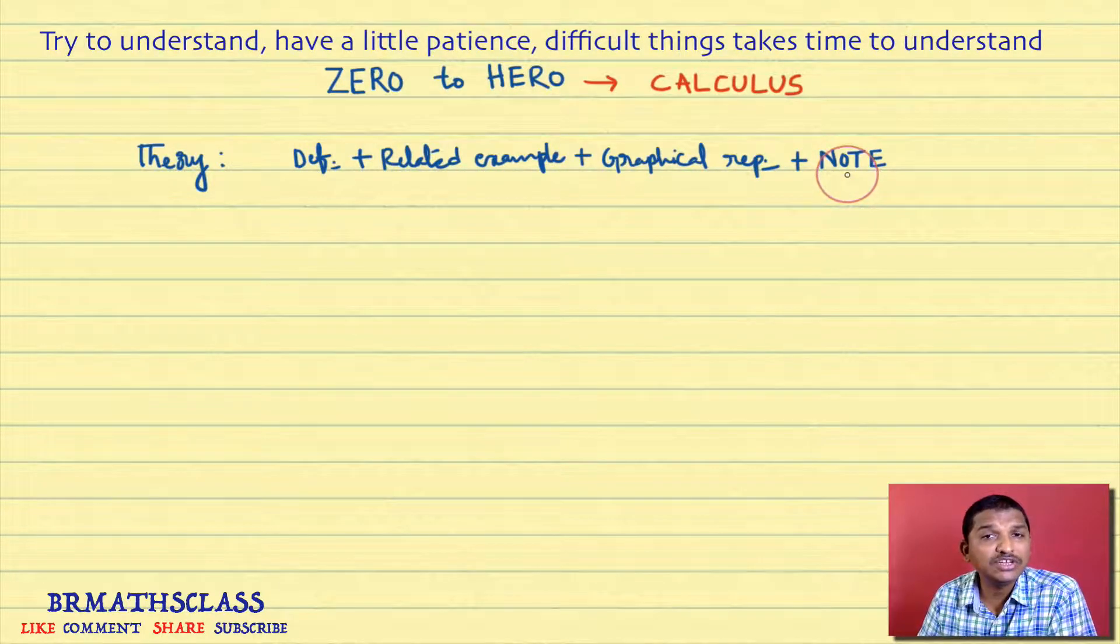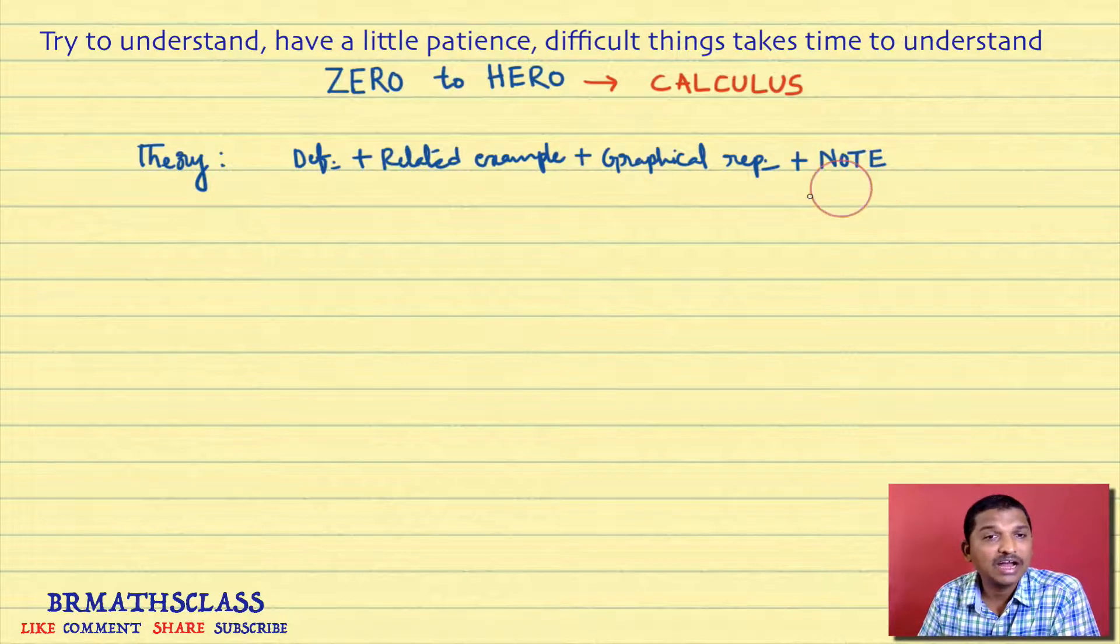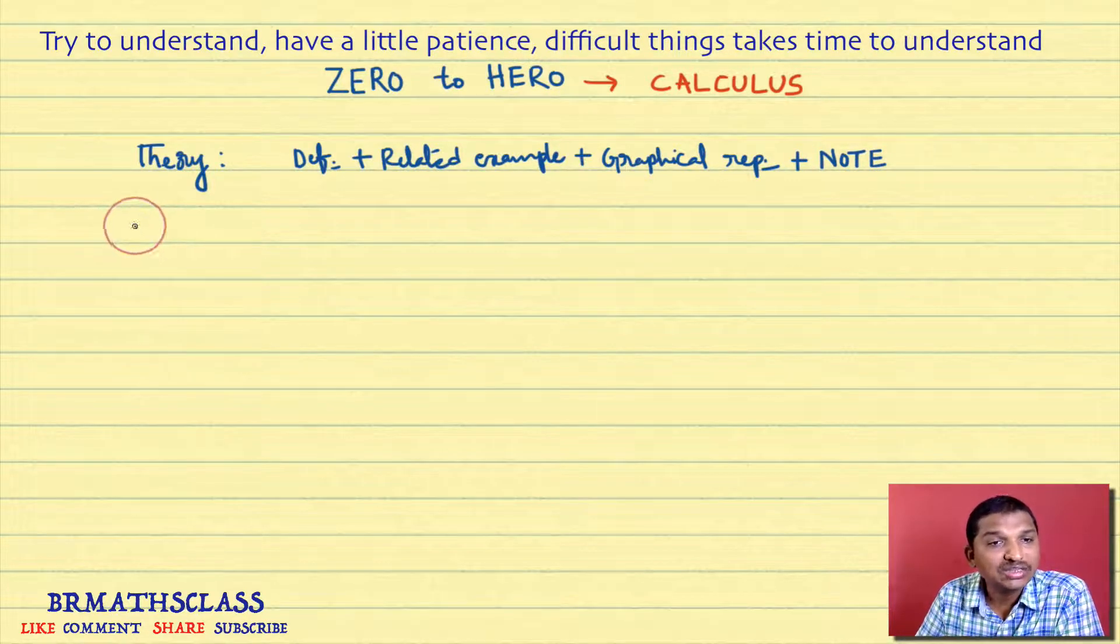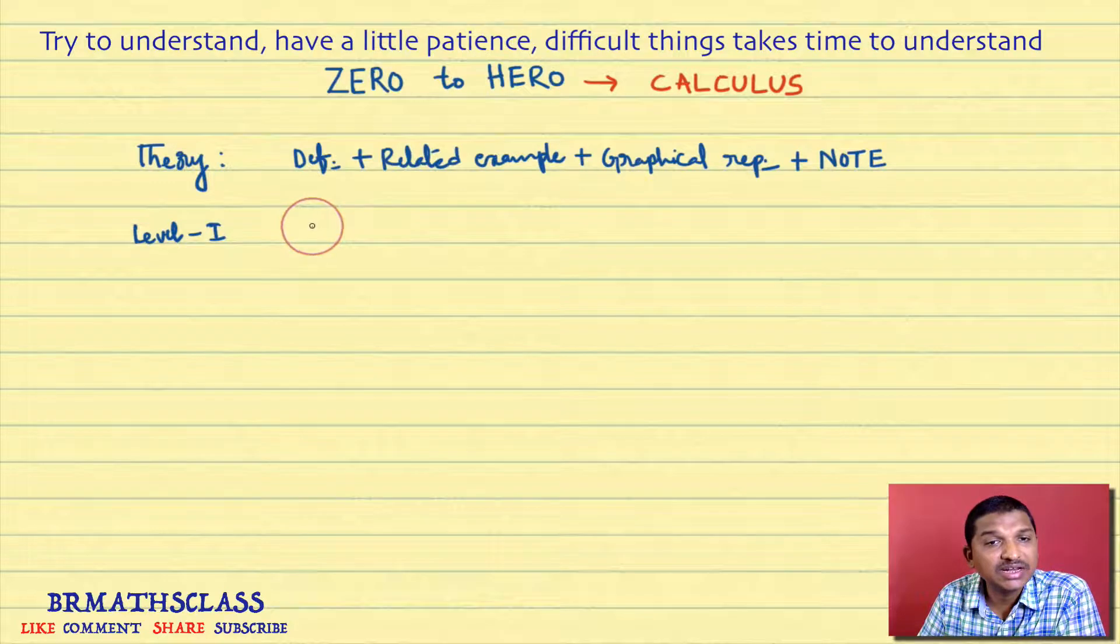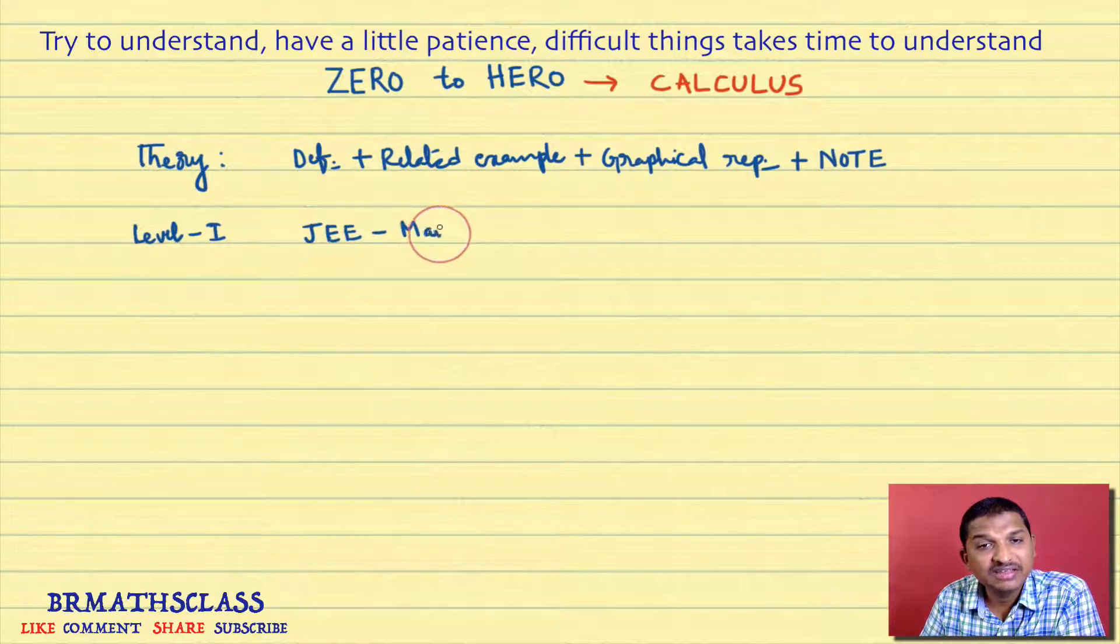All the definitions of any particular chapter we will do first. So we will treat this as part one. And it comes to part two. This is Level 1. This is completely objective oriented, and it is of JEE Mains level.